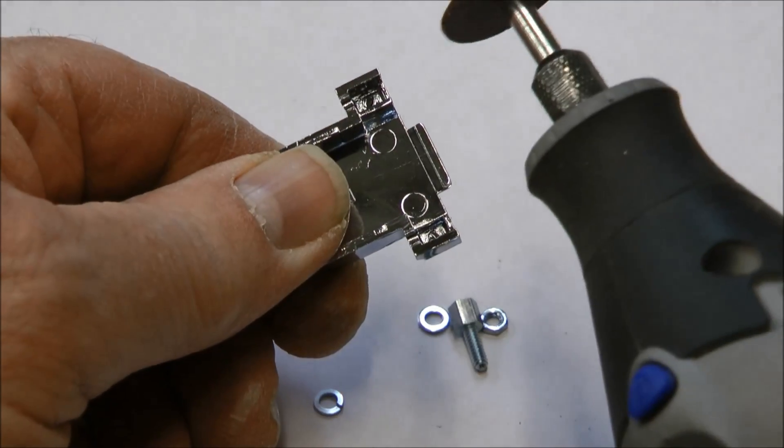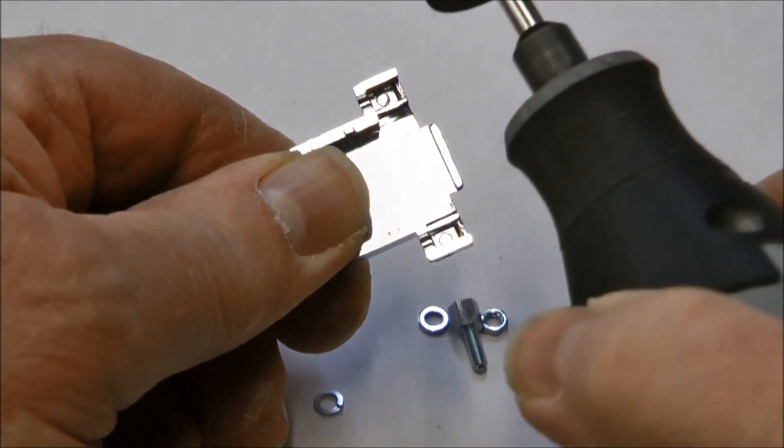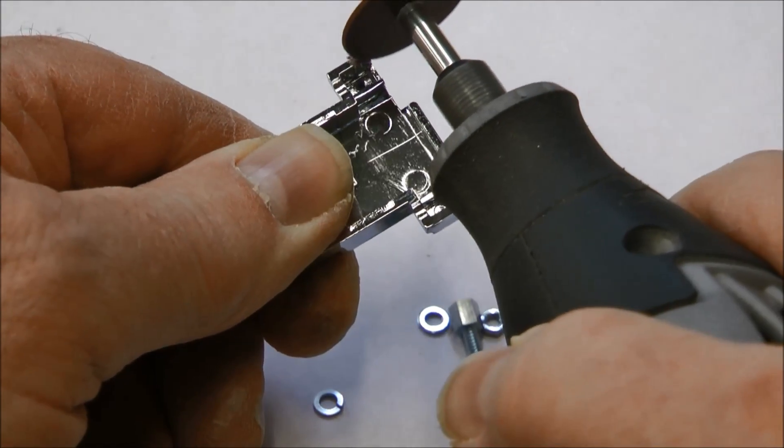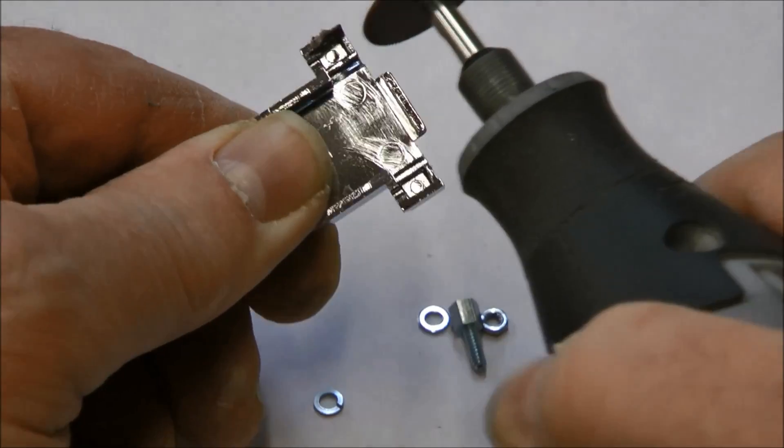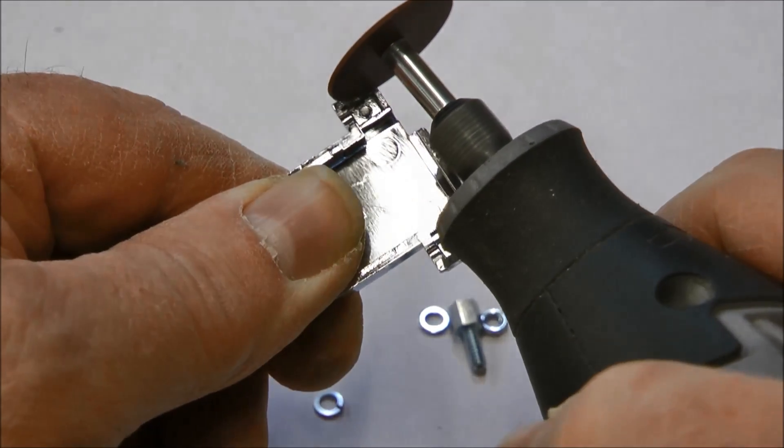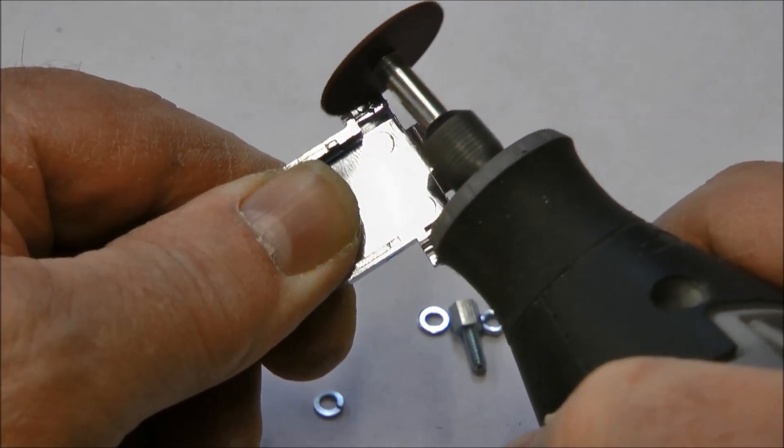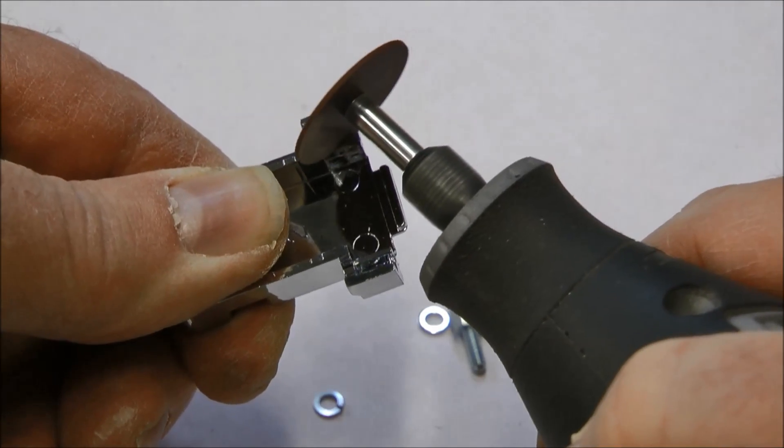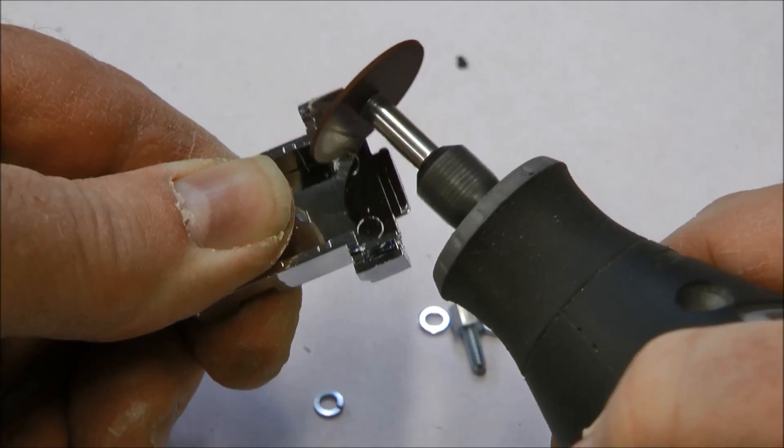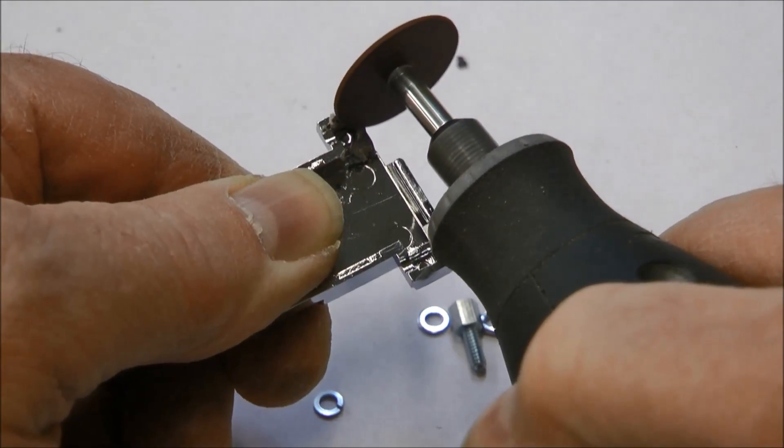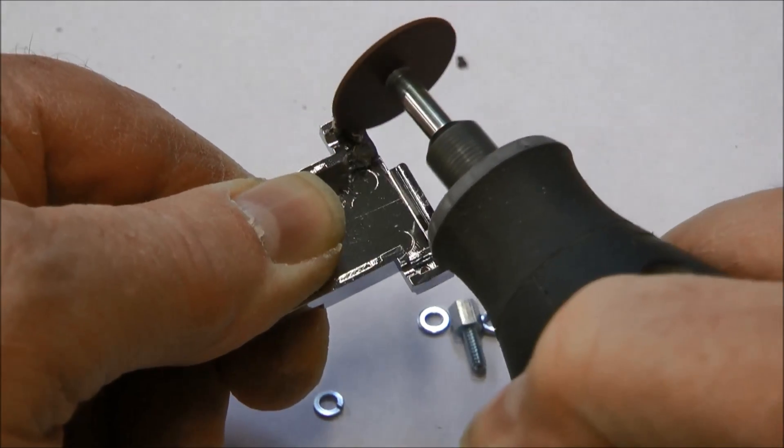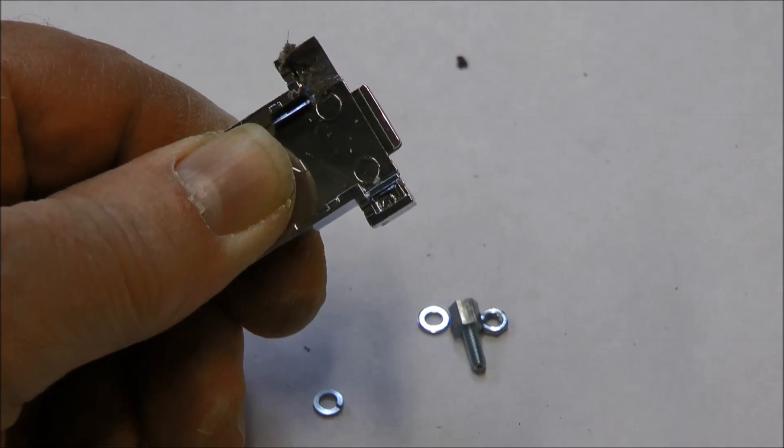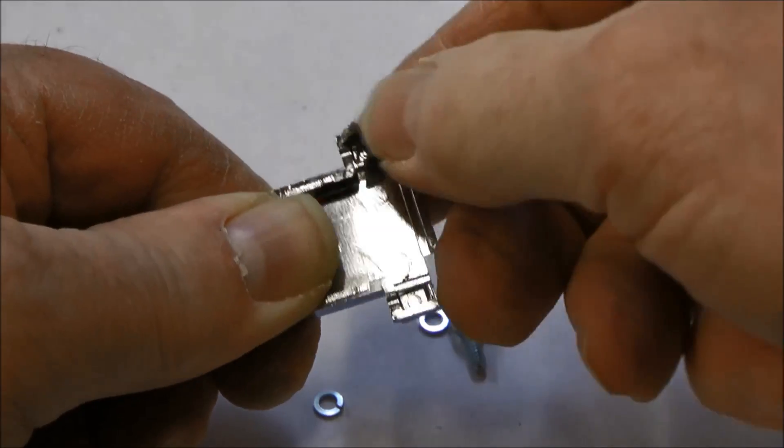All we want to do is just thin out that one edge and kind of take that other thicker edge out of there. Just like that.